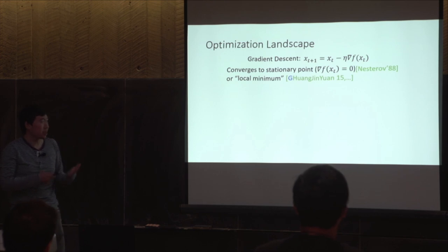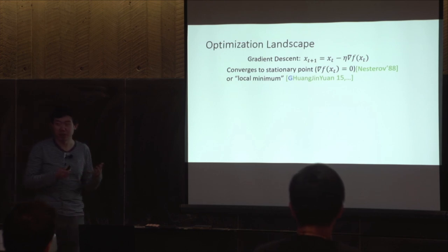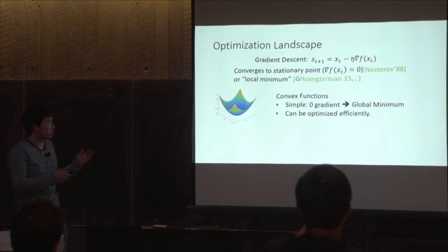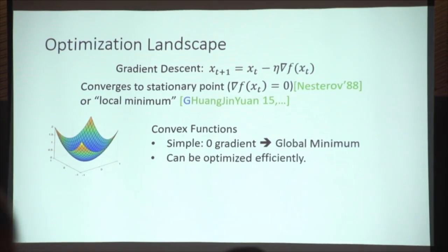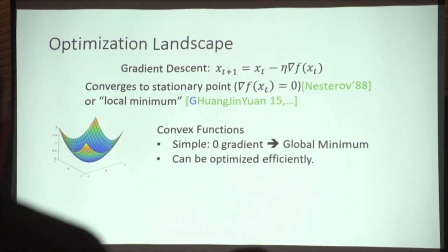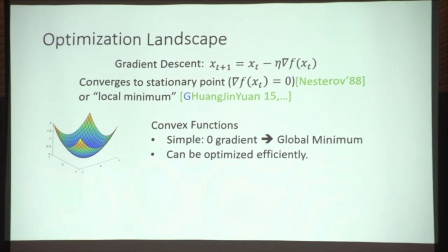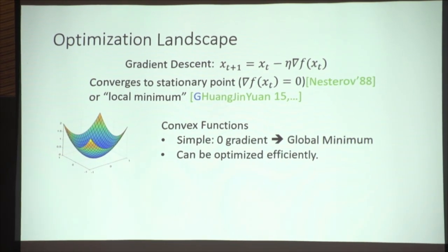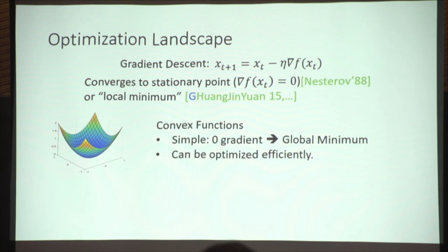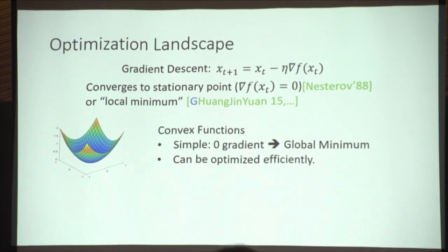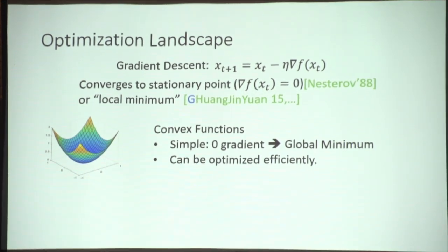But these results probably are not enough to explain why gradient descent is so successful in practice. To say that, we need to explain why either a stationary point or a local minimum is actually good enough for the objective functions we are optimizing. This has to do with what objective function you're optimizing and the shape of that function. For convex functions, they have an extremely simple optimization landscape: every point with zero gradient is always a global minimum, so every stationary point is a global minimum. There are many algorithms that optimize convex functions efficiently, including gradient descent and its variants.